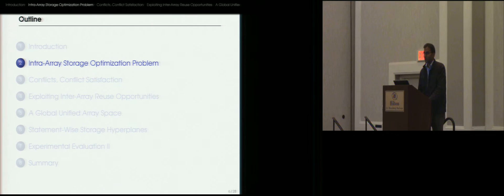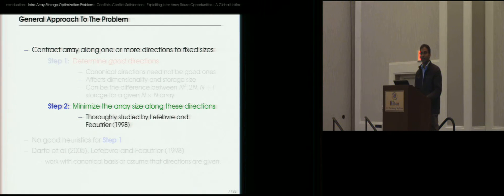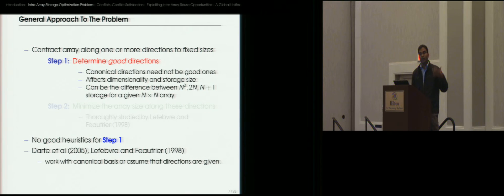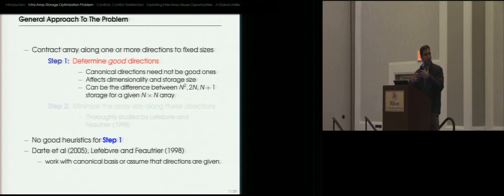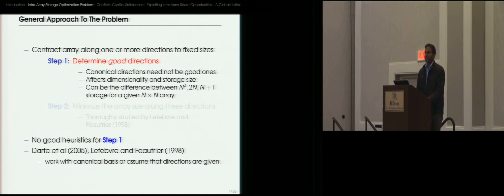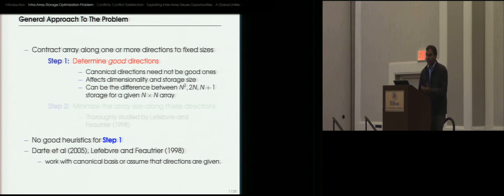Let's consider the problem of intra-array storage optimization. The general approach is to contract a given array along multiple directions to fixed sizes. The problem of minimizing the array size along a given set of directions has already been well studied by Lefevre and Fortier, but the problem of finding good directions along which to contract the array still does not have very good heuristics. Most existing approaches either assume directions have already been provided by some oracle, or assume the array must be contracted along canonical directions—the original dimensions of the array. The choice of directions is extremely important because it affects both the dimensionality and the storage size, and can be the difference between n² or 2n or n+1 storage.